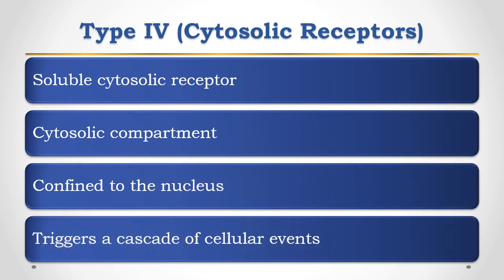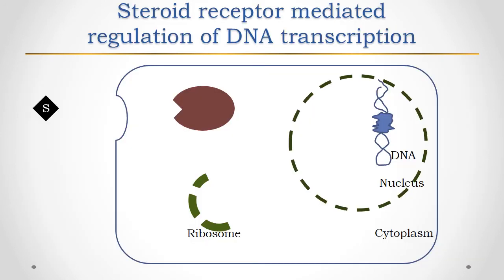These receptors are in the cytosolic compartment, but more precisely they are confined to the nucleus. After reaching inside the nucleus, they combine with the DNA and trigger a cascade of cellular events. Let's see this with the example of a steroid hormone.